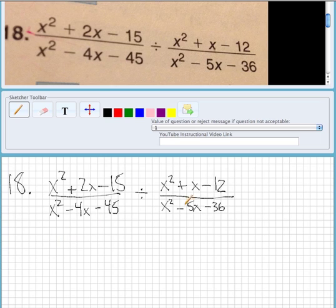An easy way to do this is flip the top and bottom and turn it into multiplying. So that's what we're going to do. The top becomes x squared minus 5x minus 36.